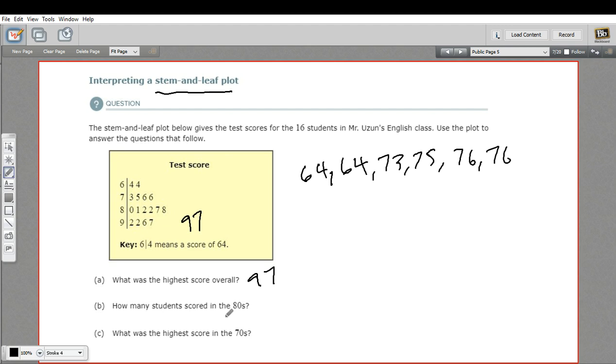B says, how many students scored in the 80s? Well, we've got an 80, an 81, two 82s, an 87, and an 88. Just count the numbers here and that'll tell you how many 80s there were. So that's six students who scored in the 80s.